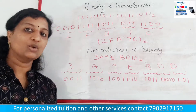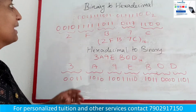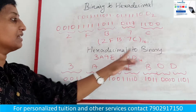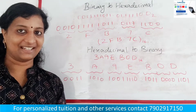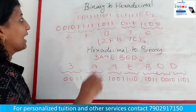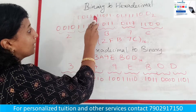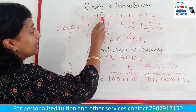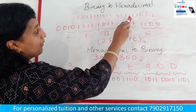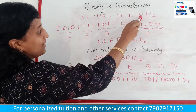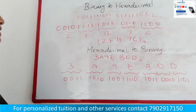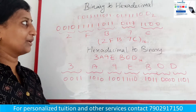Welcome back. Now we will cover binary to hexadecimal and hexadecimal to binary conversion. We have a binary number: 1011 1110 1101 1100. It is a binary number, and we will convert it to hexadecimal.